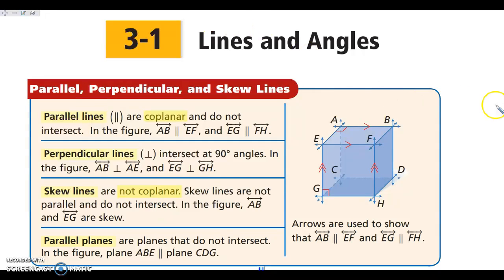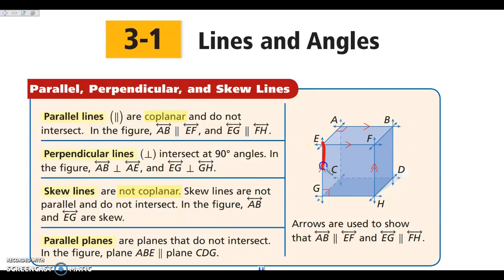For example, if we look at line EG and line AB — EG and AB are going to continue on in these directions, they're never going to intersect, yet they are not parallel. So when working with three-dimensional lines, it is not enough to say that lines don't intersect. We have to know whether or not they're coplanar to tell the difference between lines that are parallel and lines that are skew.